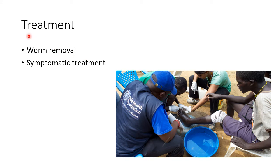How do you treat a case of dracunculiasis? Worm removal should be done and symptomatic treatment should be given to the patient. This picture shows worm removal in a case of dracunculiasis.